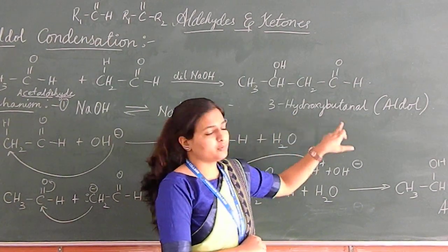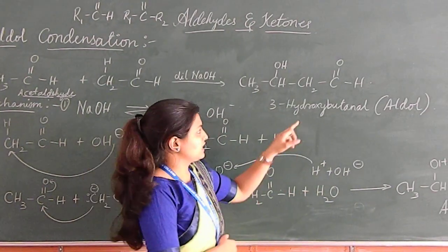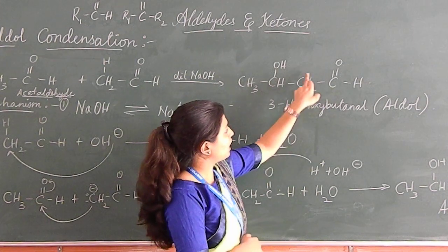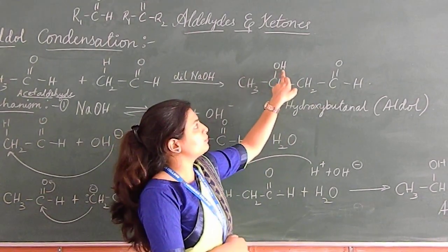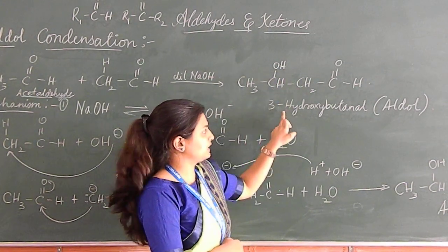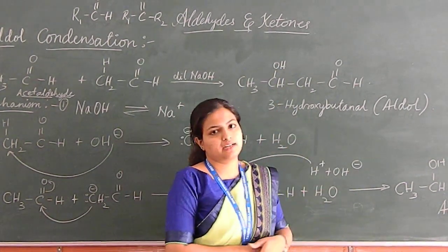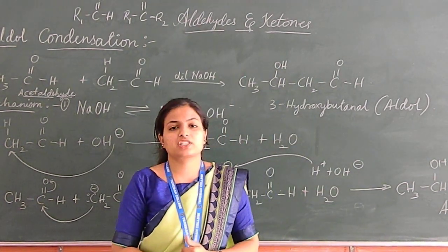Now 3-hydroxybutanal is a beta-hydroxy aldehyde as well, because this is C double bond O, alpha carbon atom, and beta carbon atom. On beta carbon atom, this hydroxyl group is attached. Hence, it is given as beta-hydroxybutanal. Now, how does this reaction take place?